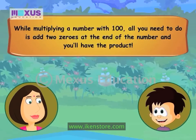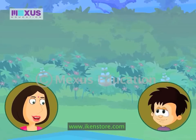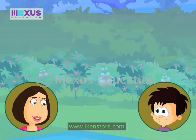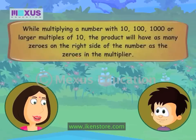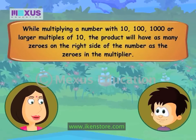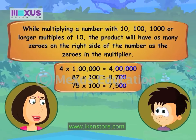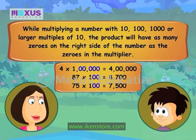And if I want to multiply a number with 1000? You add three zeros at the end of the number and you will have the product. And what about 10,000? Here's the rule: while multiplying a number with a multiple of 10, the product will have as many zeros on the right side of the number as the zeros in the multiplier.